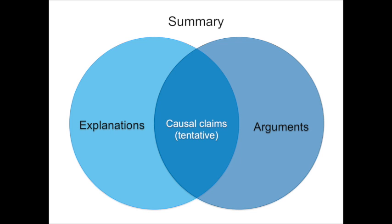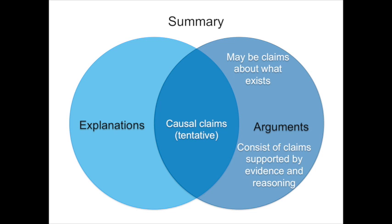Causal claims are tentative explanations for natural phenomena that may be part of an argument. Claims are not always explanations because claims may be about what exists in the universe. Engaging in argument requires individuals to coordinate claims, reasoning, and evidence, whereas explanations provide causal accounts of phenomena using theory.